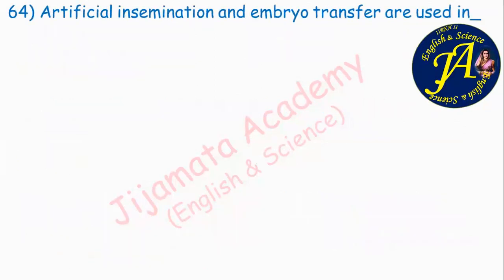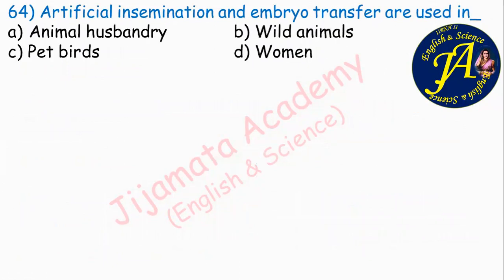Artificial insemination and embryo transfer are techniques of dash. Options are animal husbandry, wild animals, pet birds, women. Artificial insemination and embryo transfer are used in animal husbandry. Option A is the correct answer.